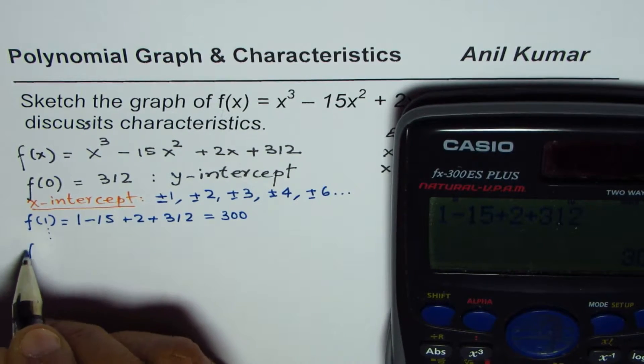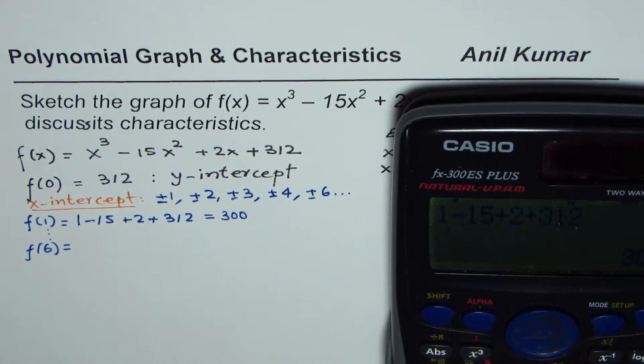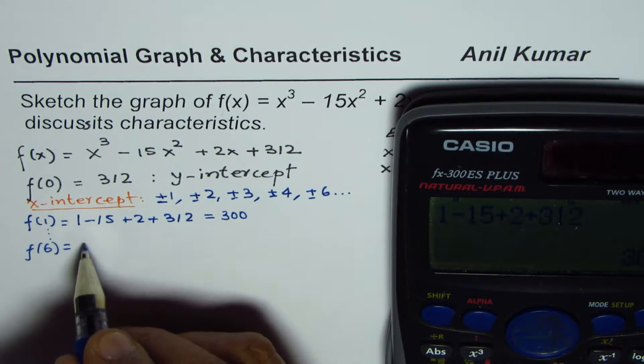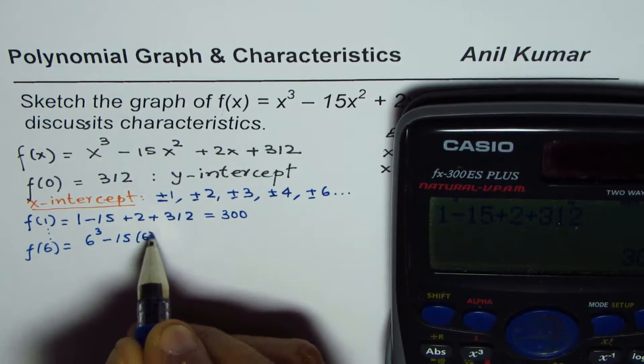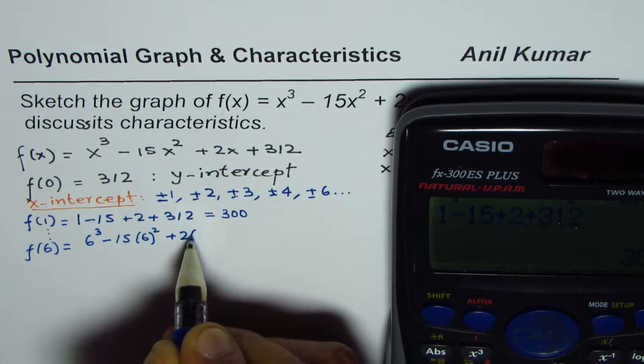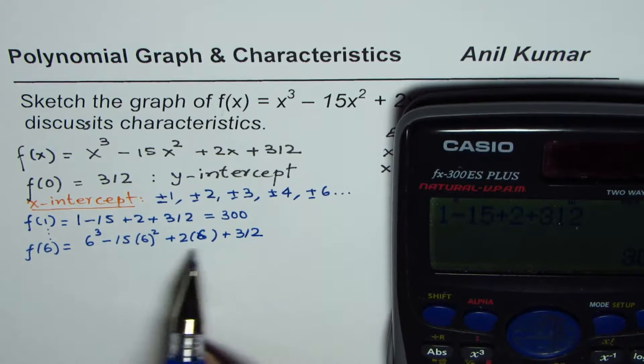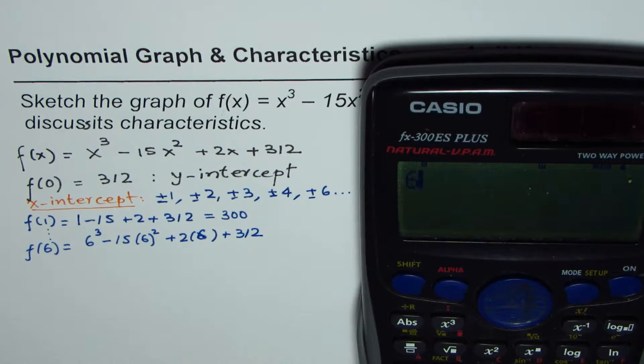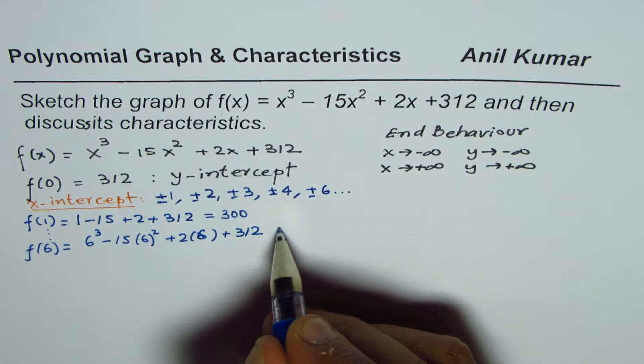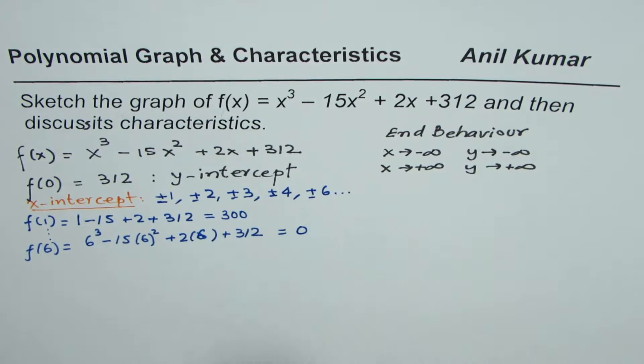So when you try 6, f(6), at that time, what happens? Let us check the value. So it becomes 6³ - 15(6²) + 2(6) + 312. So when you do this, you get actually a zero. So I calculated and figured it out. So you have to do this exercise. And when you do that, you do get zero. So we got the first zero by trial and error. And that is the process.